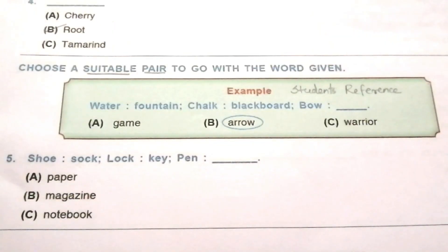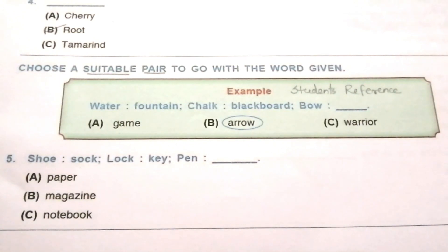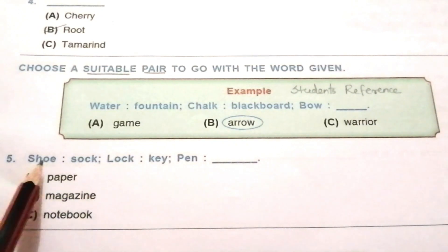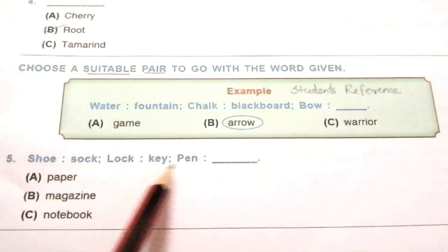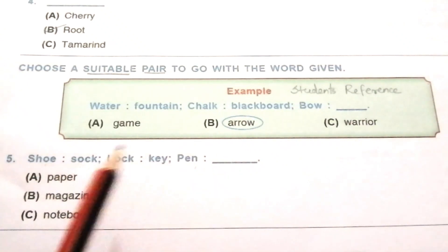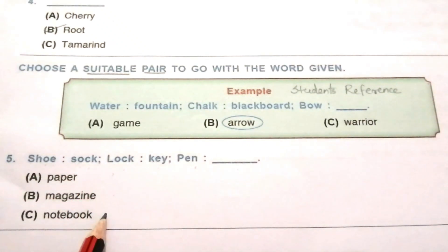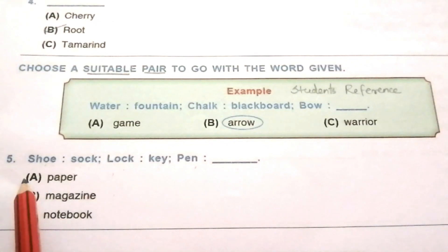Choose a suitable pair to go with the word given. Example: water — fountain; chalk — blackboard; bow — arrow. Question 5: shoe, sock; lock, key; pen — blank. Paper, magazine, notebook. The answer is A: pen — paper.